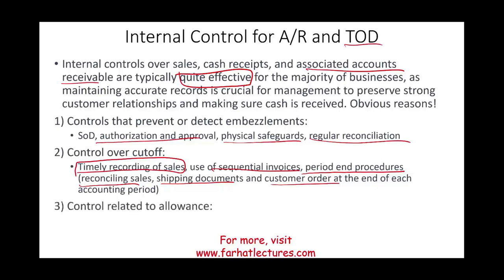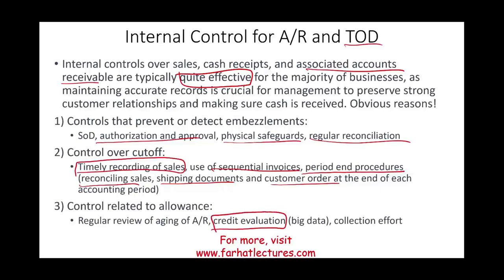The third internal control area is related to the allowance. How do you make sure your allowance is proper, given it's an estimate? You review the aging of account receivable, perform credit evaluation of your customers — running their credit to determine what's going on — and if a customer's credit is deteriorating, based on contract permission, you might have to increase your allowance. You also look at your collection effort: more collectors means less allowance; cutting down that department means more allowance because you can't keep up.